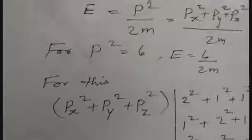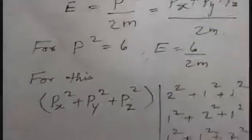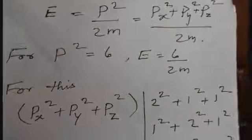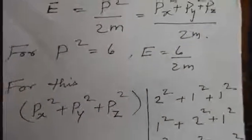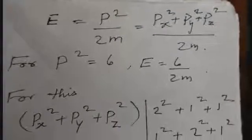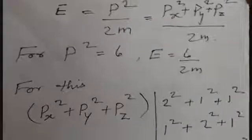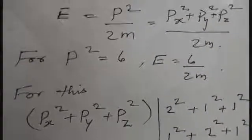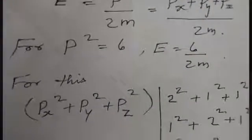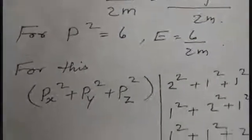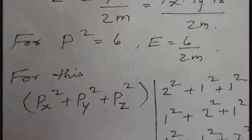The momentum is a vector, so its components are px, py, and pz. Therefore p-squared equals px-squared plus py-squared plus pz-squared. The vector p equals i-cap times px plus j-cap times py plus k-cap times pz. The energy is given by p-squared over 2m. Suppose p-squared equals 6, then the energy state value is epsilon equals 6 over 2m.